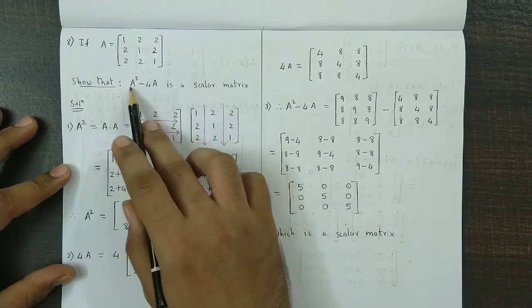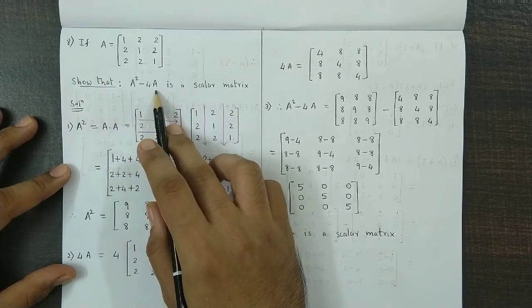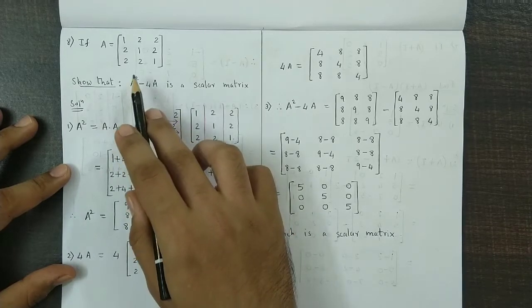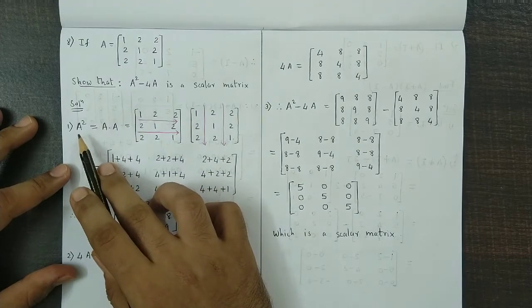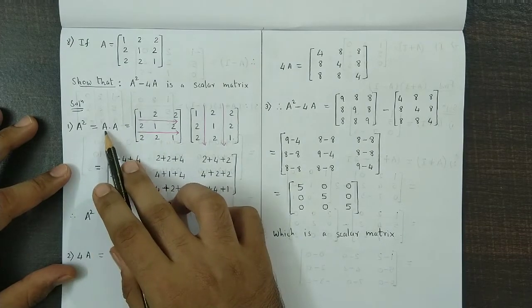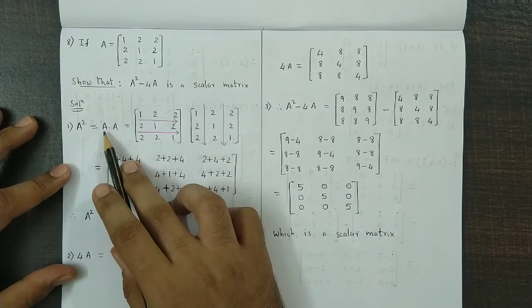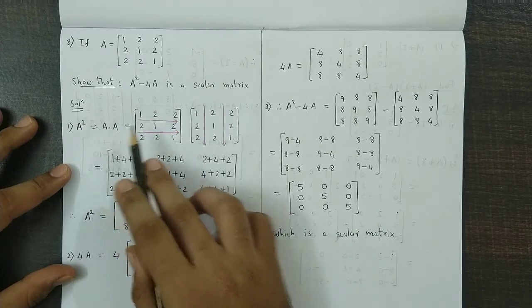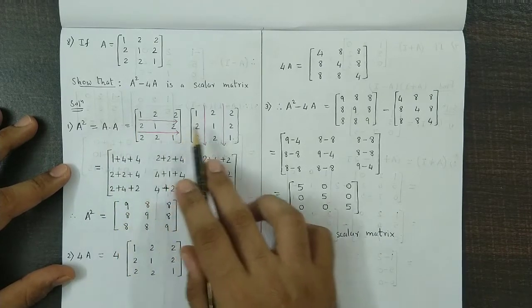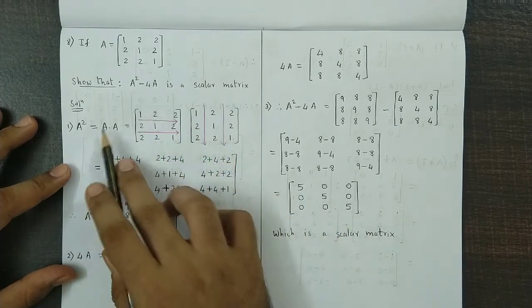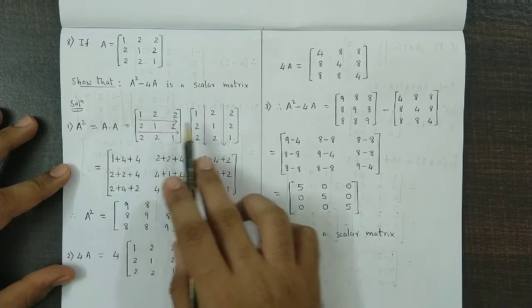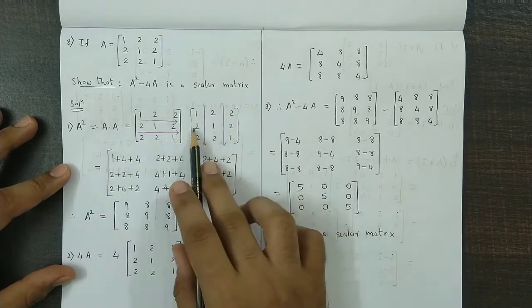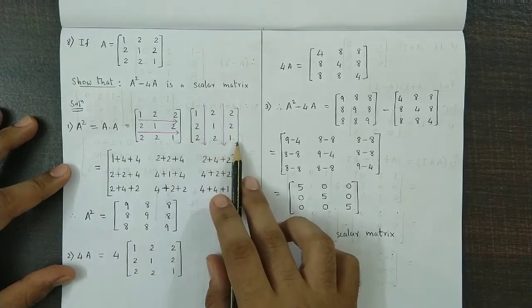First we obtain A square minus 4A. In this we first obtain A square. Now how do we obtain A square? A square is nothing but matrix A times itself, that is A into A. So we have to multiply matrix A with itself. So matrix A is 1, 2, 2, 2, 1, 2, 2, 2, 1 multiplied by itself.